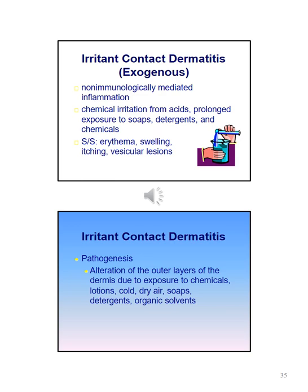Irritant contact dermatitis is a non-immunologically mediated inflammation. Causes include chemical irritation from acids, prolonged exposure to soaps, detergents, and chemicals. Signs and symptoms include erythema, swelling, itching, and vesicular lesions. The pathogenesis involves alteration of the outer layers of the dermis due to exposure to chemicals, lotions, cold or dry air, soaps, detergents, and organic solvents.